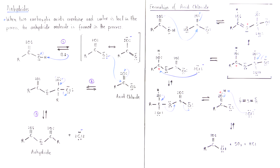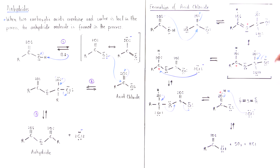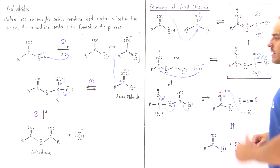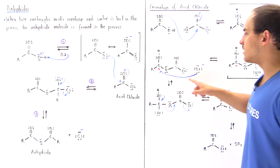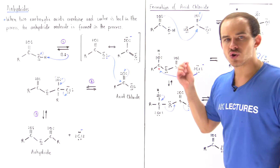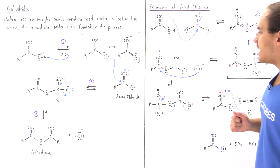In the next step, one of these good leaving groups — our chloride — is kicked off in an elimination reaction. A pi bond reforms between the oxygen and sulfur, kicking off one of these chloride atoms to form the chloride ion, as well as this molecule that contains a positive charge on the carbon that is also resonance stabilized.